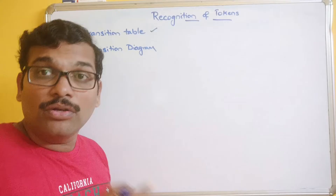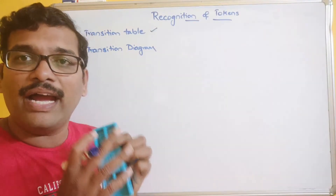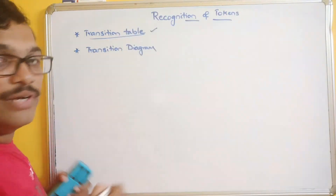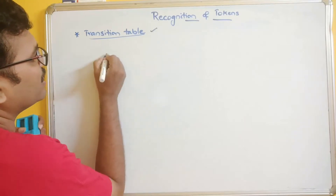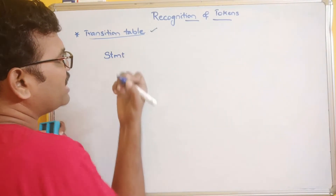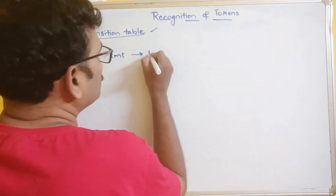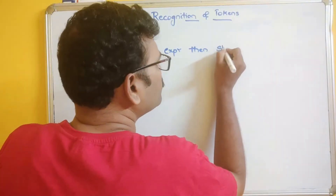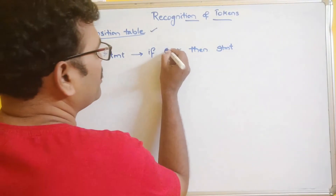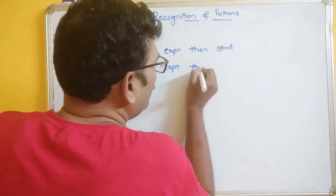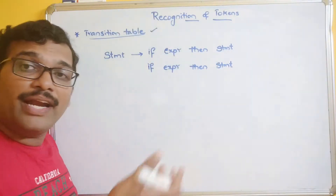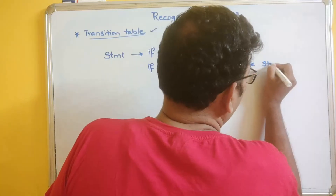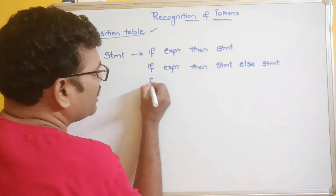In order to create the transition table, we first need to identify the different categories of tokens in the statements. The grammar or statements will look like this: a statement can be written as 'if expression then statement', or 'if expression then statement else statement', or the statement can be null.